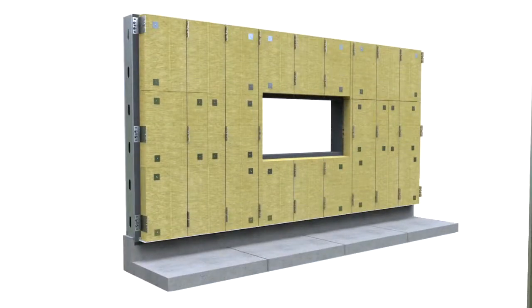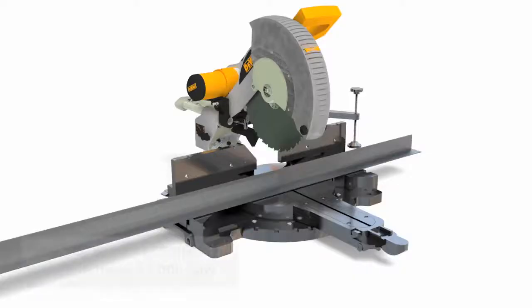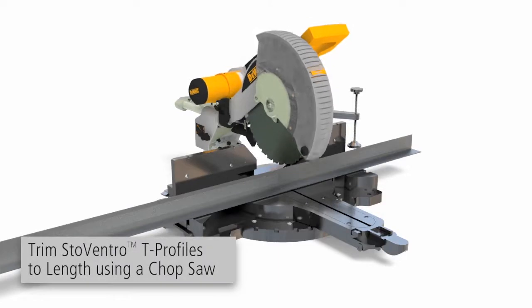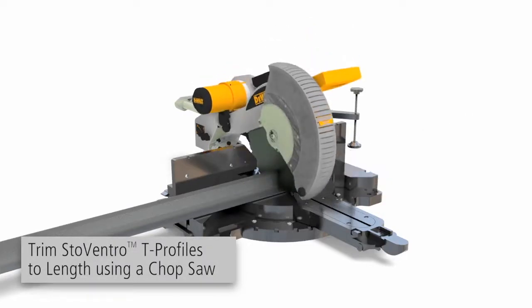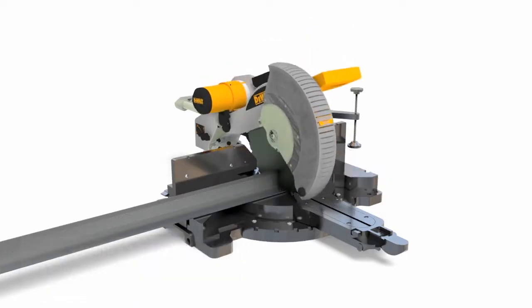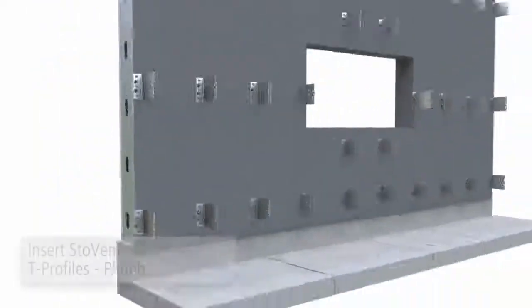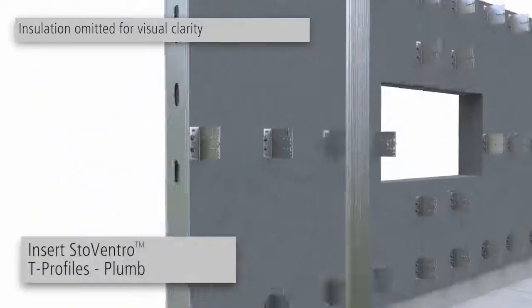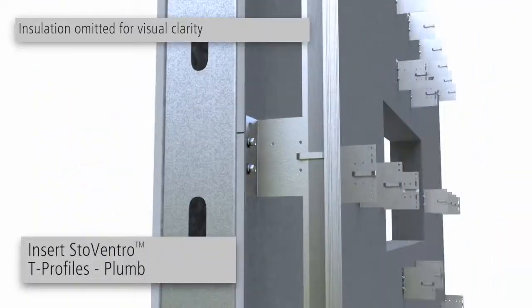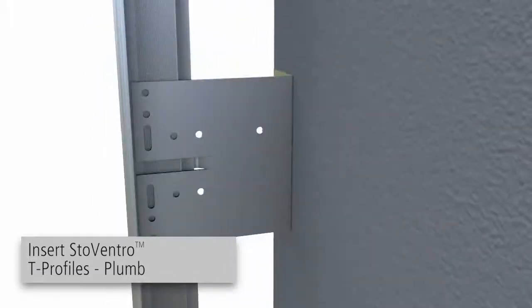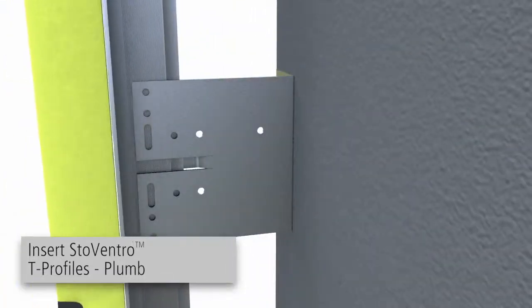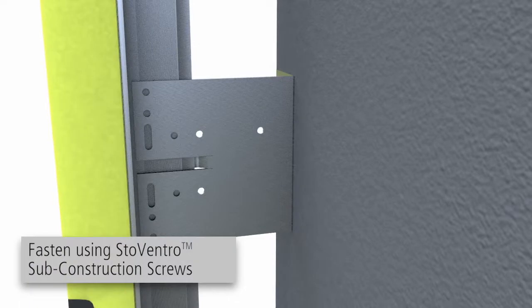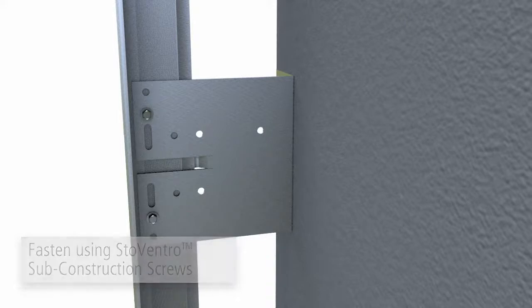Next, score the insulation at vertical T-profile locations. Trim the T-profiles to length using a chop saw and deburr the cut edges. Align the T-profiles to the reference line and fasten into the slots in the brackets. Using a spirit level or laser level, align the exterior axes. Fasten to the brackets using StoweVentro sub-construction screws per project-specific drawings.